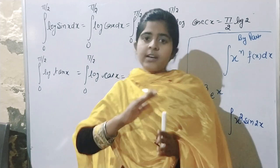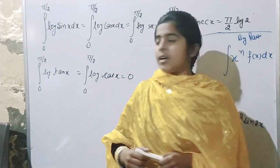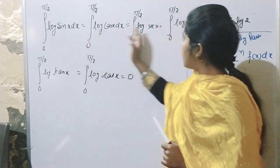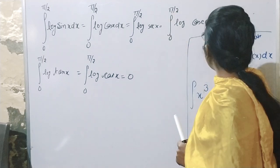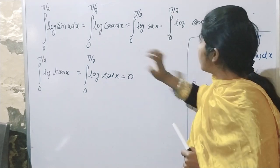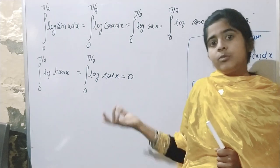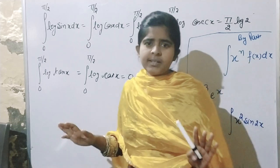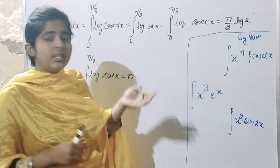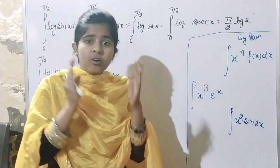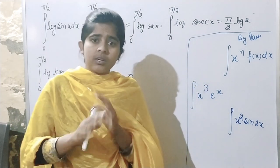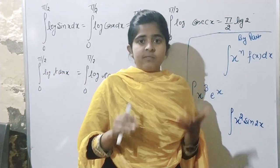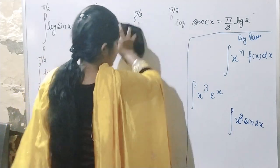Some integrals can be very easy and some very difficult. For example, the log of sin, cos — that is pi on 2 log 2 — but if you take the log of tan, your answer will be 0. Now we will move to our trick.